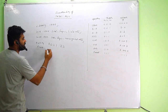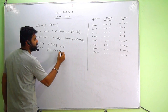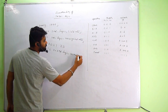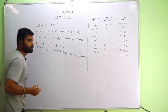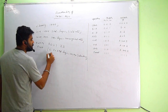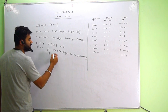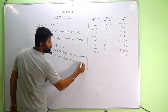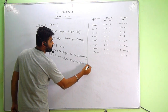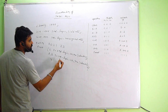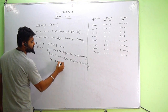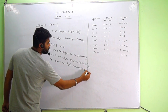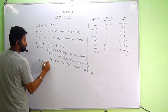So, S is in standard_logic_vector 2 down to 0 — it's a 3-bit input. Then there are A and B operations; both A and B are 4-bit each, declared as standard_logic_vector 3 down to 0. The output Y (or F) is also standard_logic_vector 3 down to 0. End entity ALU1.